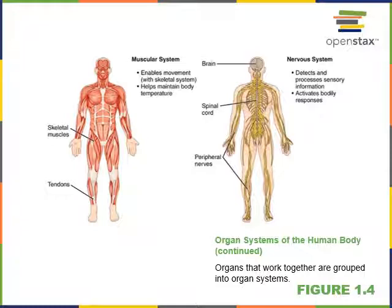The nervous system consists of the brain, spinal cord, and nerves — including cranial nerves and spinal nerves — that connect to the brain and spinal cord. The functions of the nervous system include collecting sensory information, processing this information, and then sending information out to regulate organs like muscles and glands.